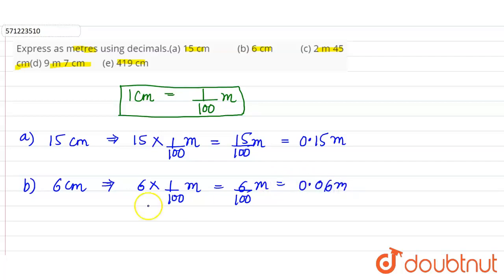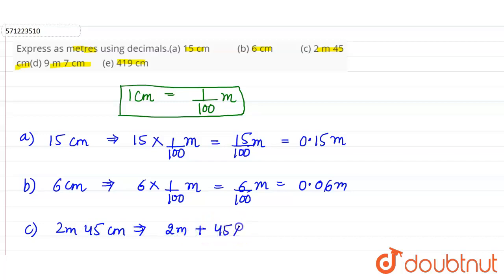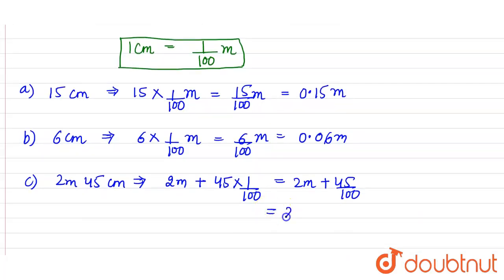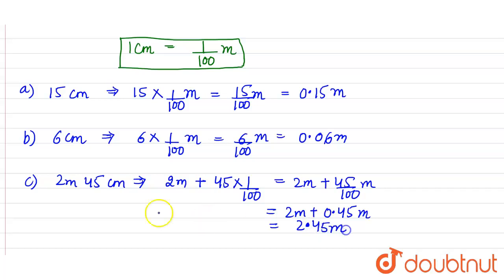Part C is 2 meter 45 centimeter. The 2 meters stay as is, and 45 centimeter equals 45 into 1 by 100, which is 45 divided by 100, written as 0.45, because we place the decimal two places from the left. So 2 meter plus 0.45 meter equals 2.45 meter.